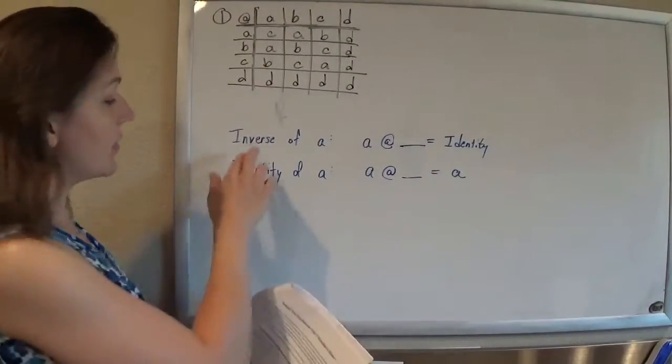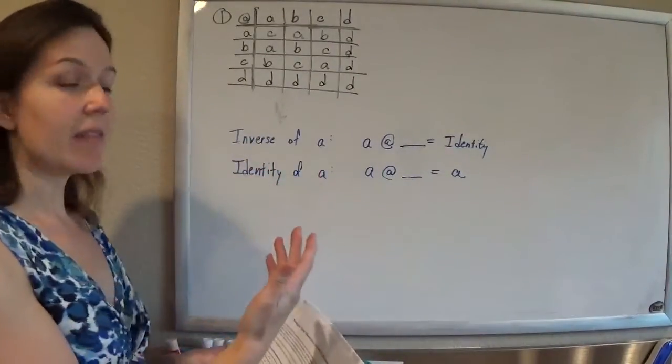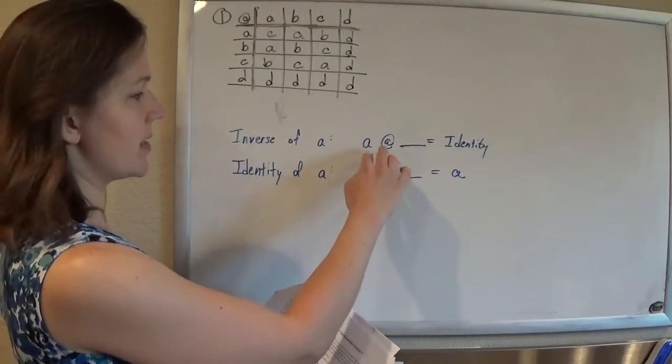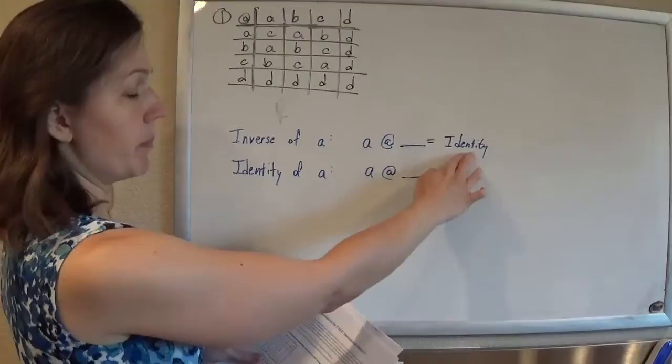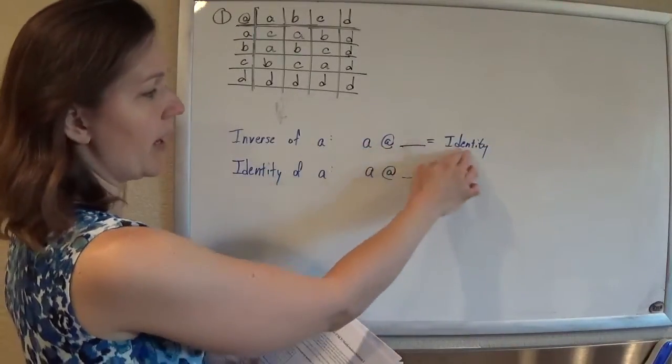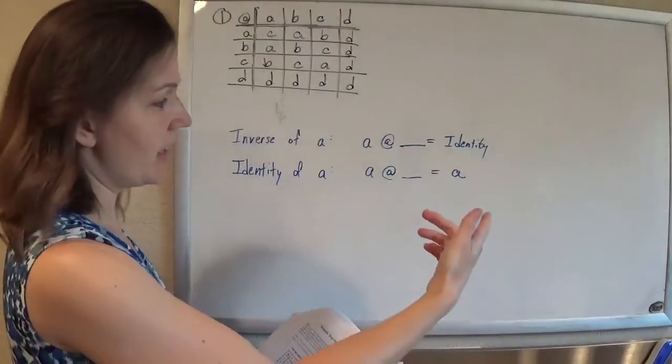Okay. So we're asked to find the inverse element of A, and by definition, an inverse element is the element that you can combine A with to get the identity, the element that will undo A to give you back the identity element.